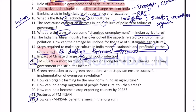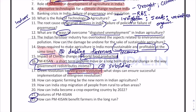PM Kisan — is it a short-term populist move or a long-term structural change in the way the government redistributes income, or in the way subsidies are being provided to farmers in agriculture? Green revolution to evergreen revolution: what steps can ensure the successful implementation of the evergreen revolution? What is the objective and definition of the evergreen revolution, and what steps are required to ensure its successful implementation?